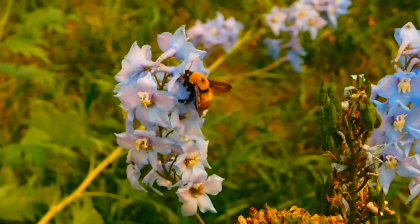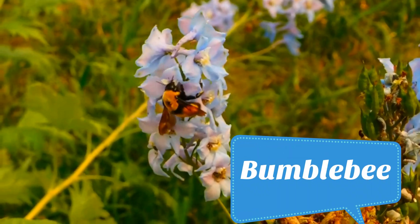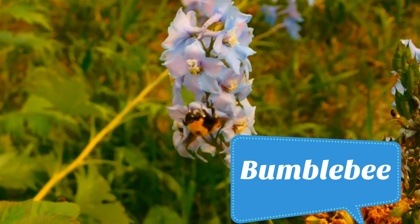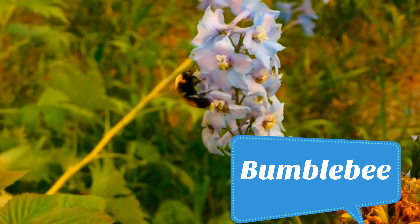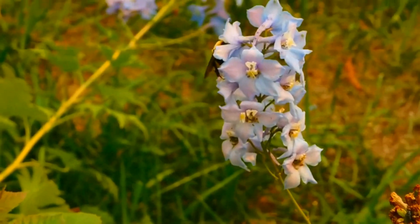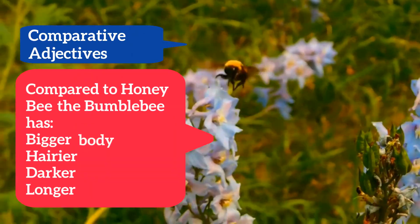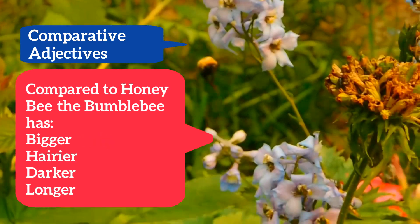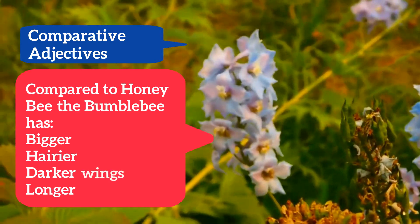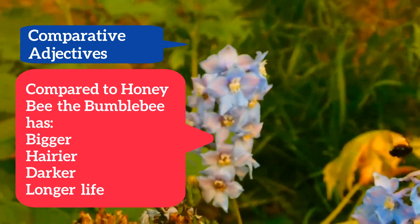Our next insect is a very close cousin of the honeybee — the bumblebee. What are the differences between a honeybee and a bumblebee? Let's use some comparative adjectives to find out. The bumblebee has a bigger body and a hairier body. We could also say the bumblebee has darker wings than the honeybee, and that it has a longer life.